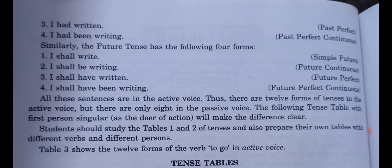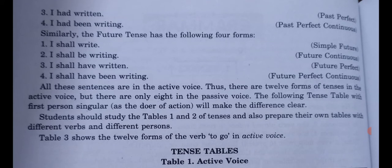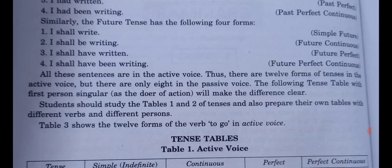Similarly the future tense has four forms: 'I shall write' — simple future; 'I shall be writing' — future continuous; 'I shall have written' — future perfect; 'I shall have been writing' — future perfect continuous.